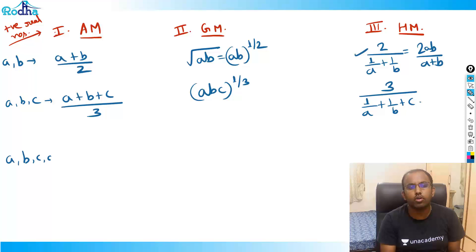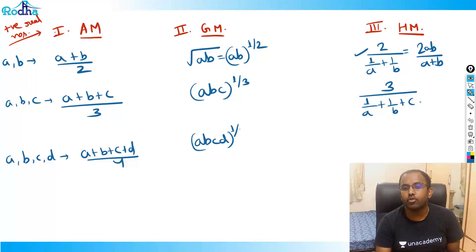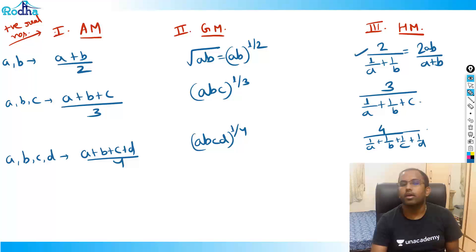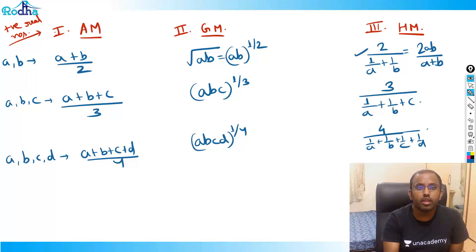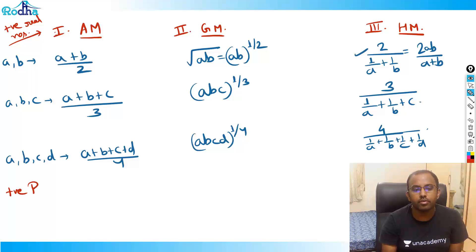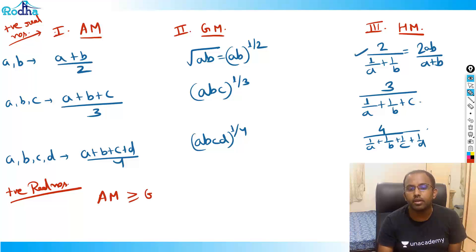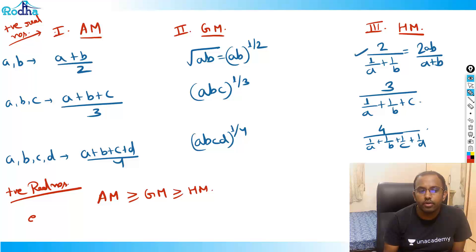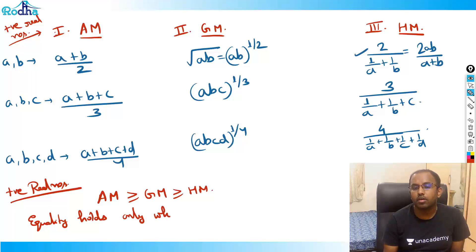For all positive real numbers, their arithmetic mean is always greater than or equal to the geometric mean, and the geometric mean is always greater than or equal to the harmonic mean — that is, AM ≥ GM ≥ HM. Equality holds only when all the numbers are equal.